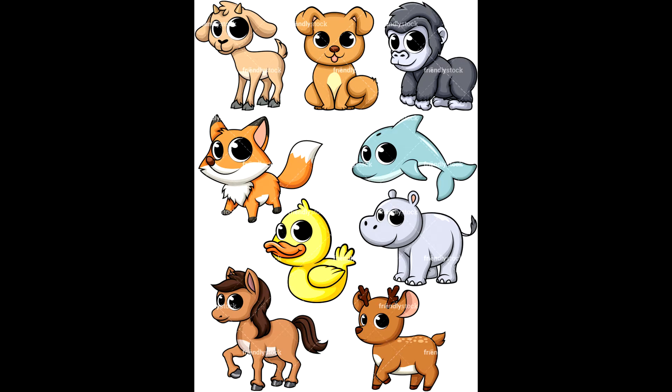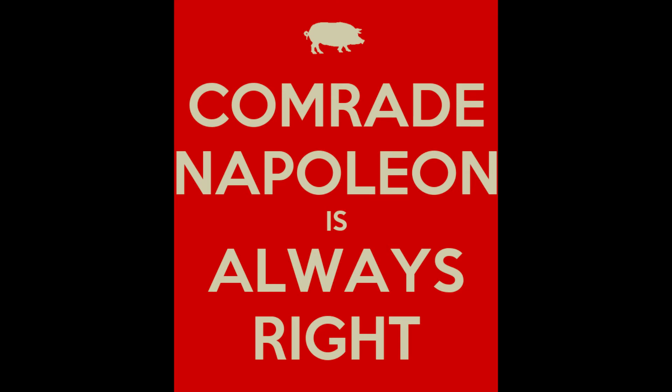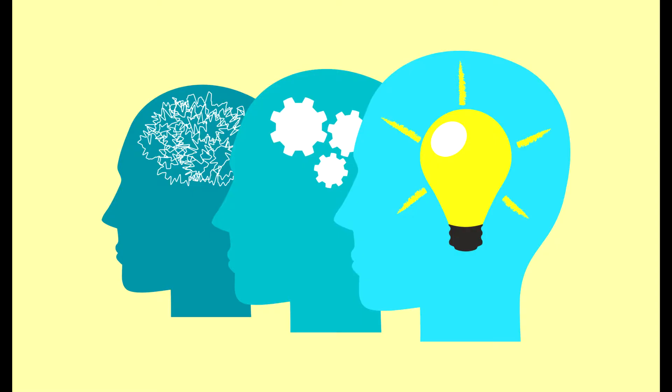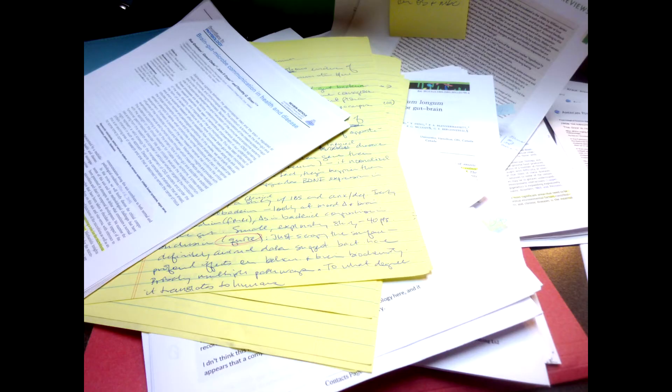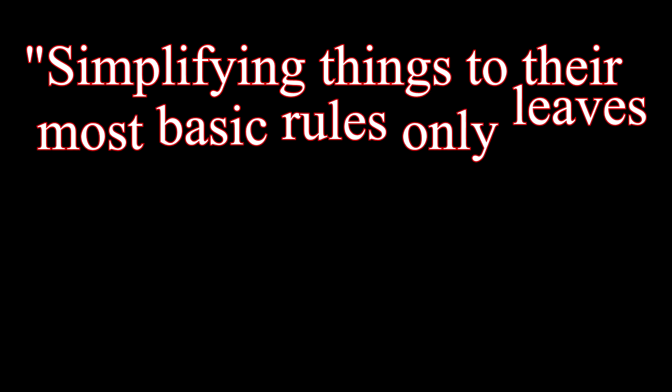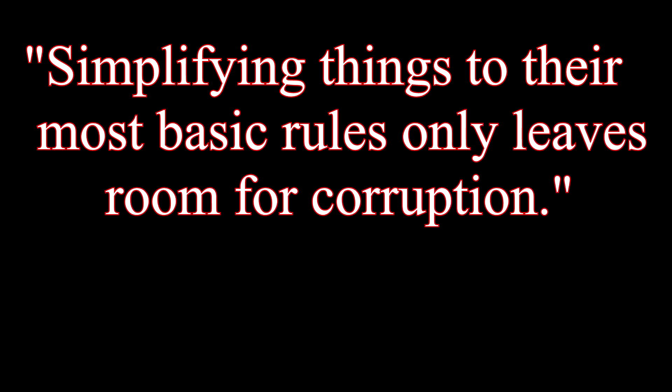Theme 3: Language. Overall, Animal Farm demonstrates how propaganda will control people — or animals. One of the big uses of language would be 'four legs good, two legs bad,' and 'Napoleon is always right.' These both demonstrate the animals' lack of understanding for their own revolution. Something I noted when reading Animal Farm: simplifying things to their most basic rules only leaves room for corruption. I'll see you next time.